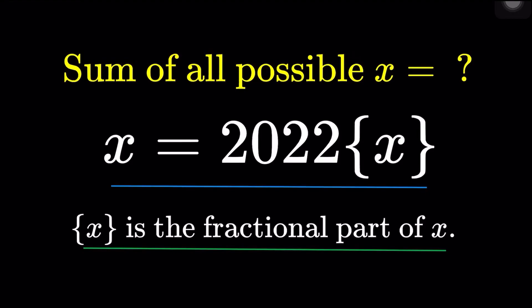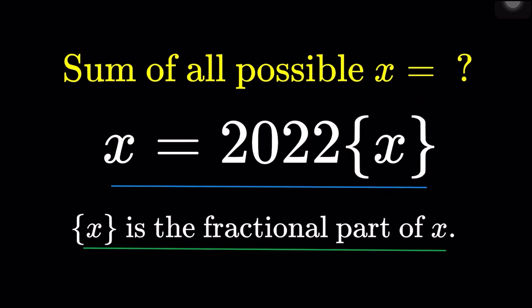Hello, it's Thumblet here. Here's an item on algebra: find the sum of all possible real numbers x such that x is equal to 2021 times the fractional part of x. The fractional part of x is denoted by x enclosed in braces. Pause this video if you'd like to give this item a try, but if you're done, let us dive into the solution.